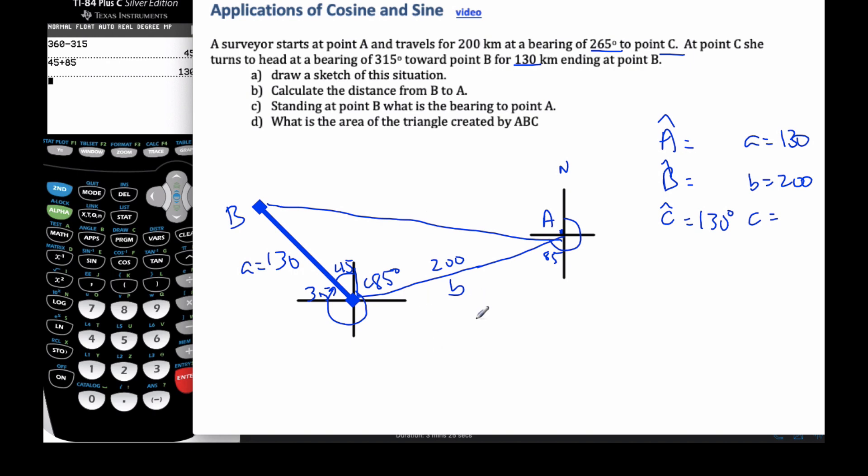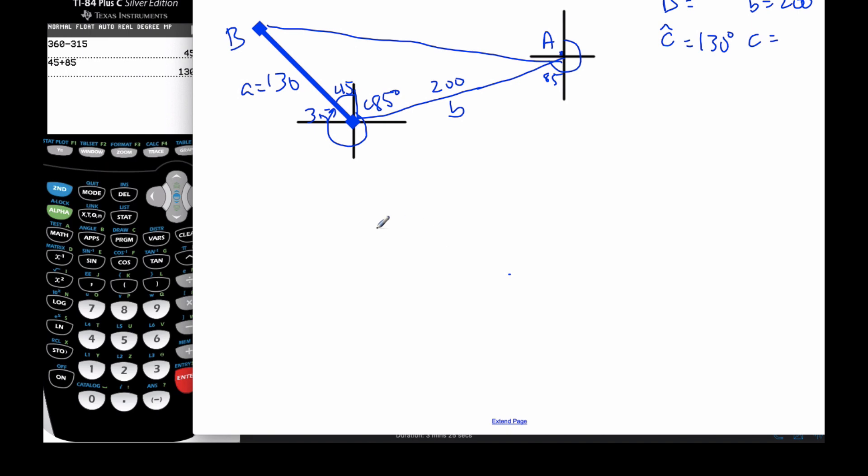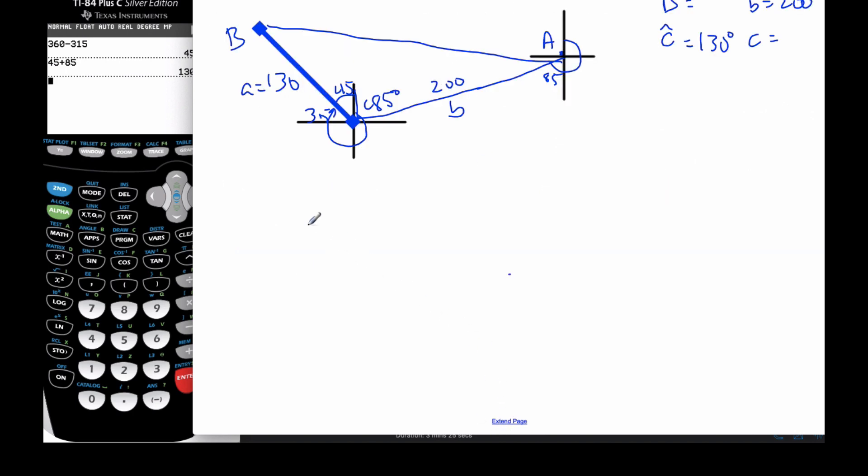And so what often happens when I start making these pictures, it ends up being a big giant mess. And so I often make the picture several times. And let me try it again down here. I mean, okay, so I know I'm going to have a value here, about there, something like this to here, and something like that to here. Okay?